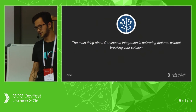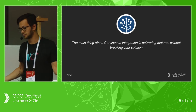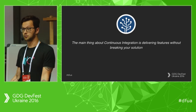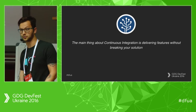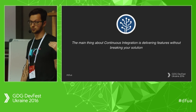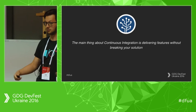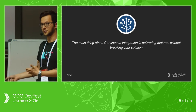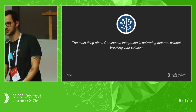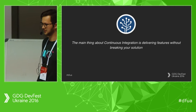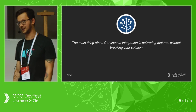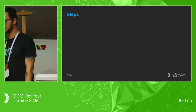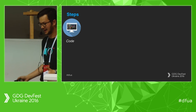For me, the main thing about continuous integration is delivering features without breaking your solution. Every time we go to merge our code, we should be 100% sure we are not breaking our teammates' code. It's fine if your teammates are sitting right next to you, but sometimes they're in New York or Bangalore, and it's going to be a nightmare.